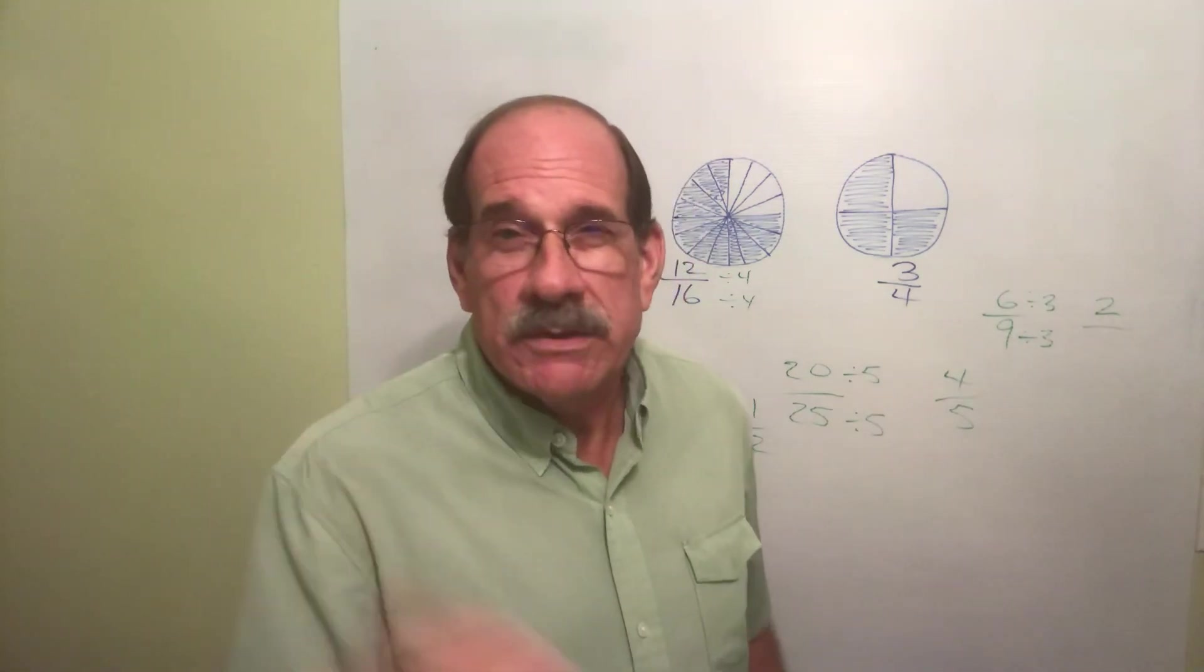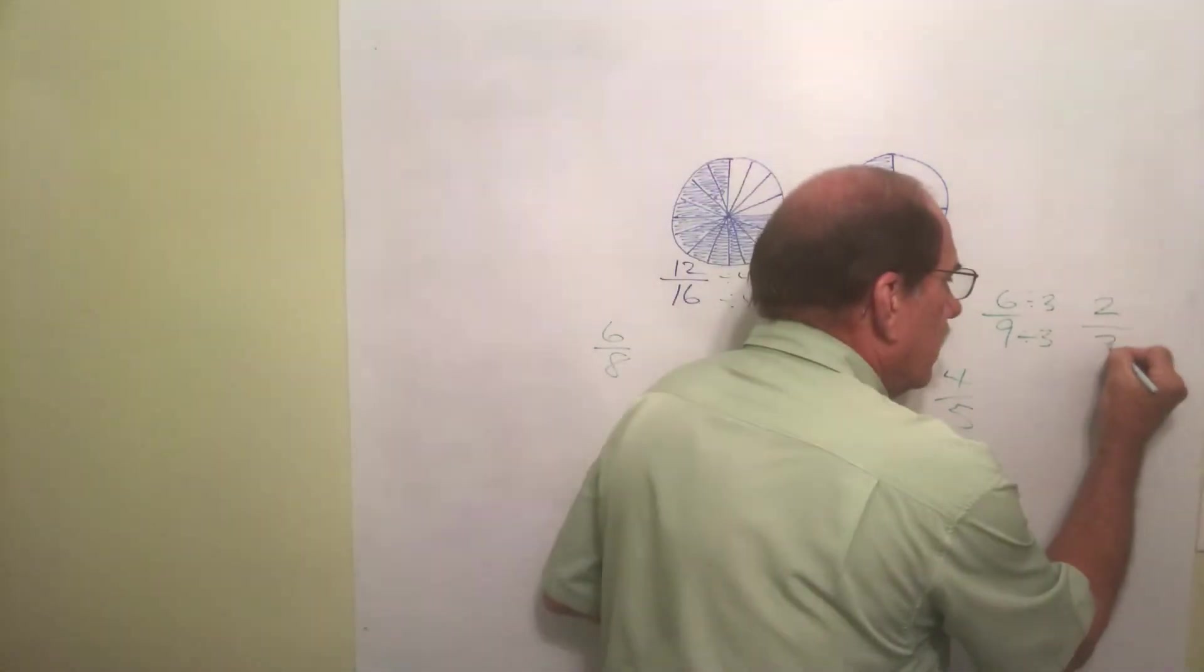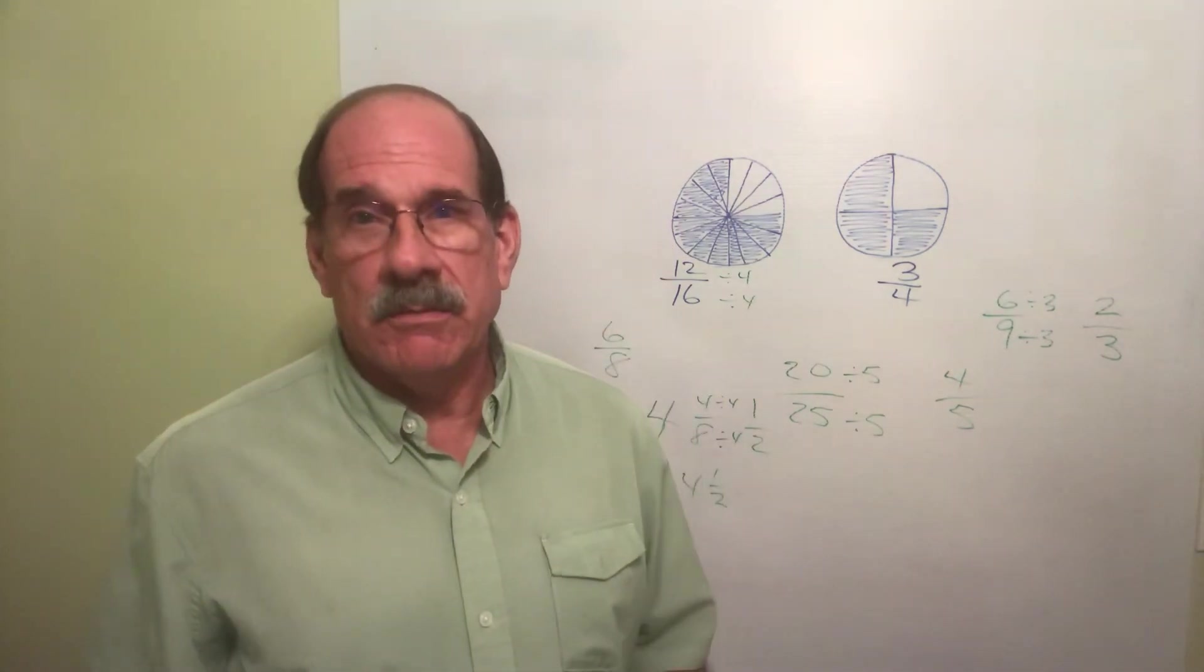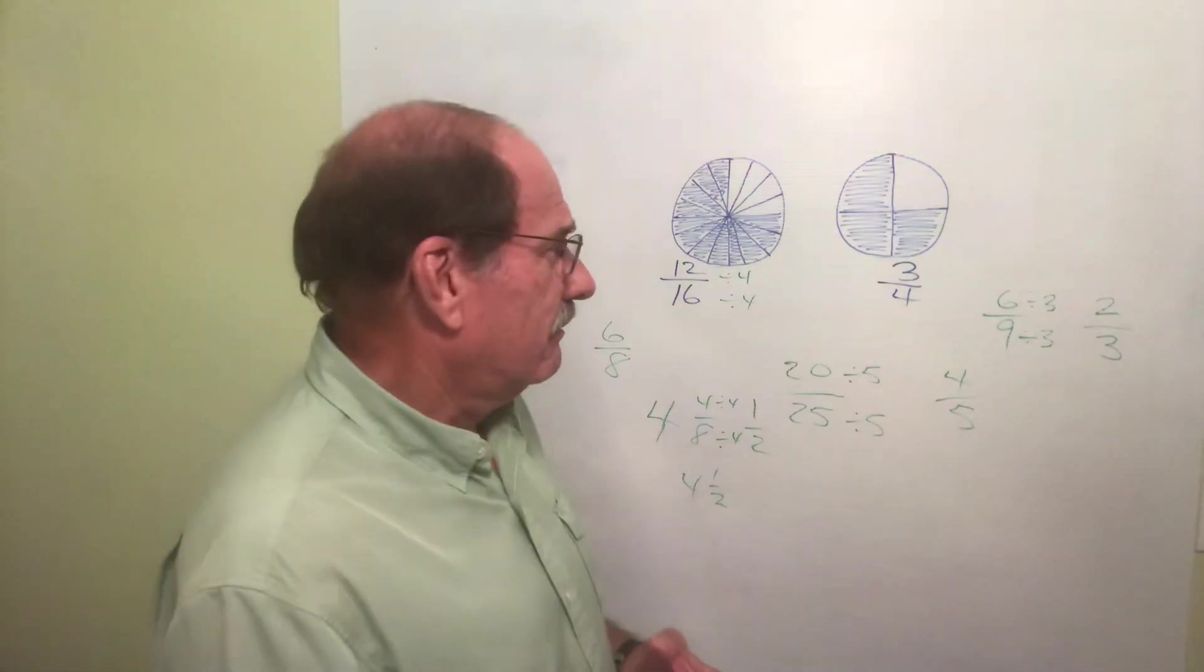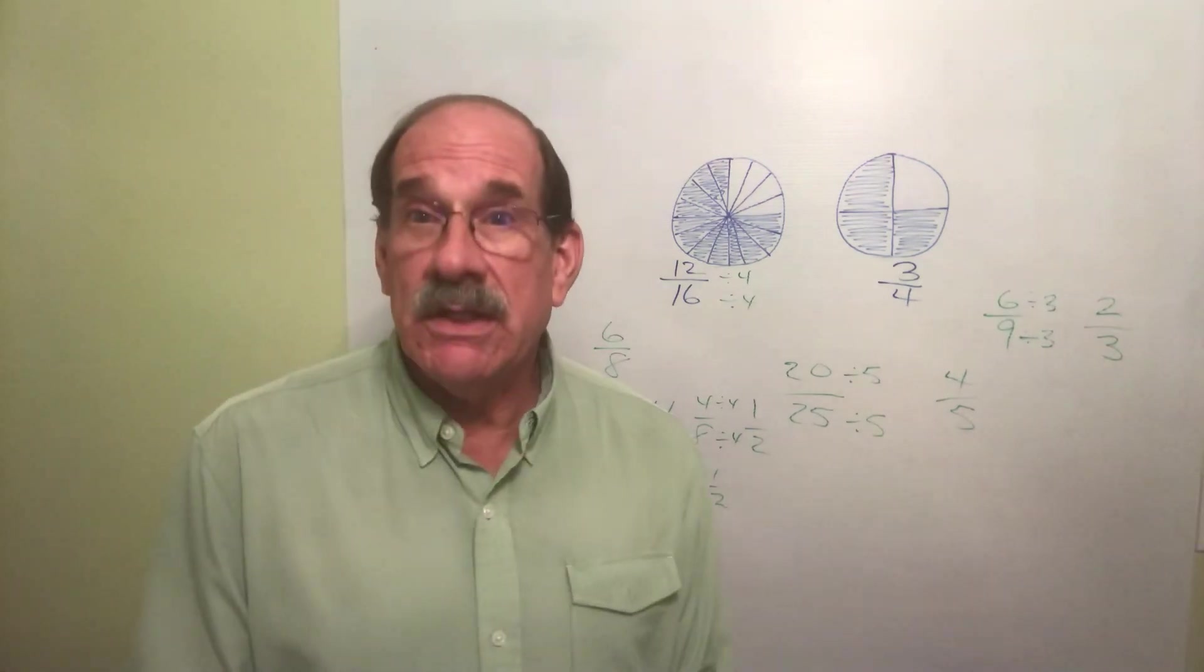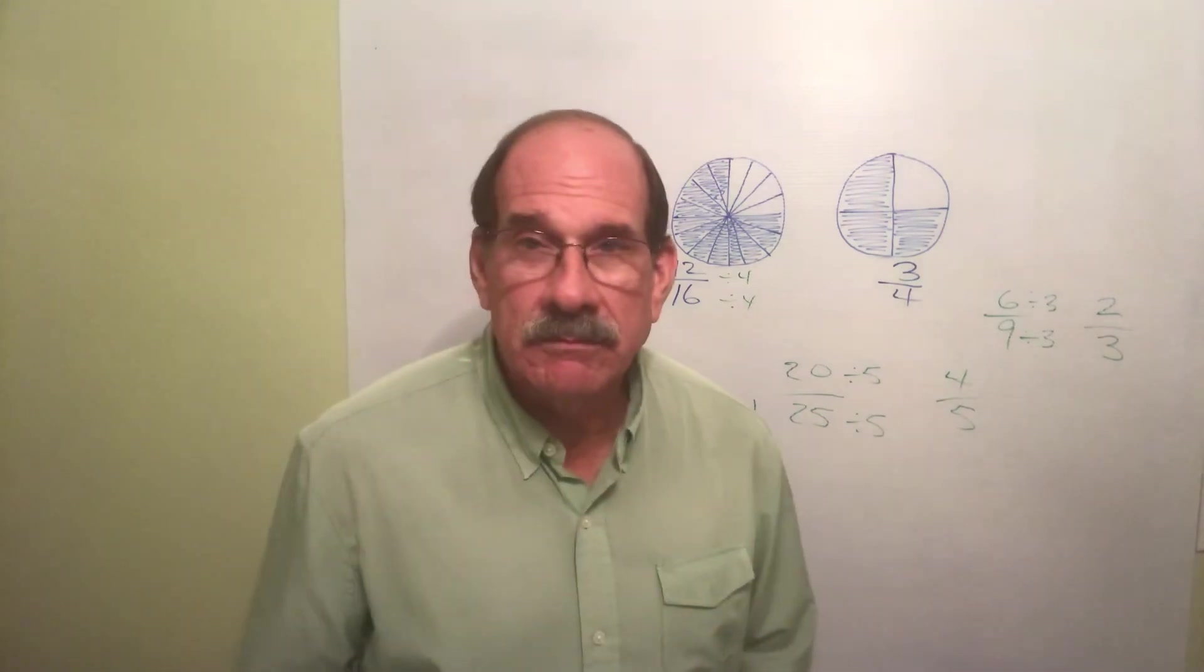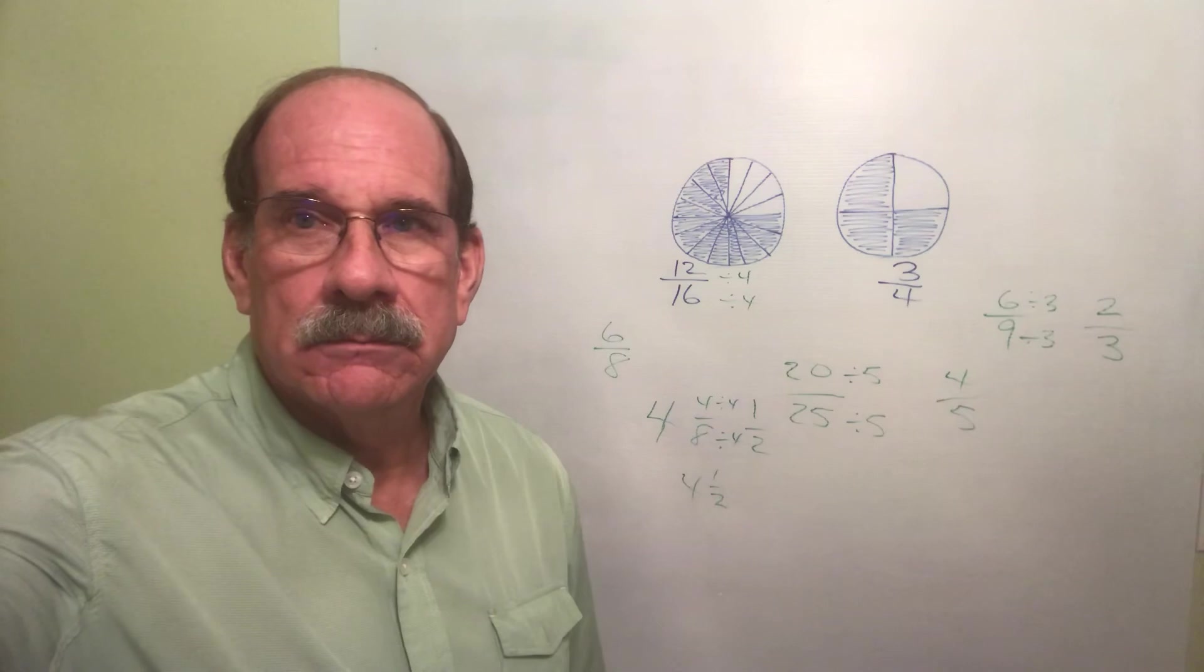Try giving somebody 6/9ths of a tablespoon - that sounds stupid. Give them 2/3rds - that's much easier. Always reduce to lowest terms. Well, there's that topic. Isn't this exciting? This is great stuff.